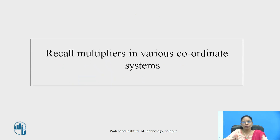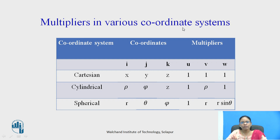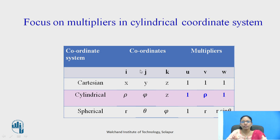Let us recall the coordinates and multipliers in different coordinate systems. In Cartesian, the coordinates are x, y, z and multipliers are 1, 1, 1. In cylindrical, the coordinates are ρ, φ, z and the multipliers are 1, ρ, 1. In spherical, the coordinates are r, θ, φ and multipliers are 1, r, r·sinθ. Since this question is on cylindrical coordinates, we focus on coordinates ρ, φ, z and multipliers 1, ρ, 1 respectively.